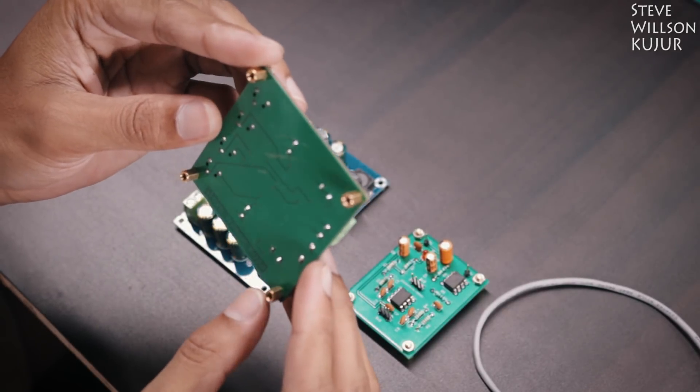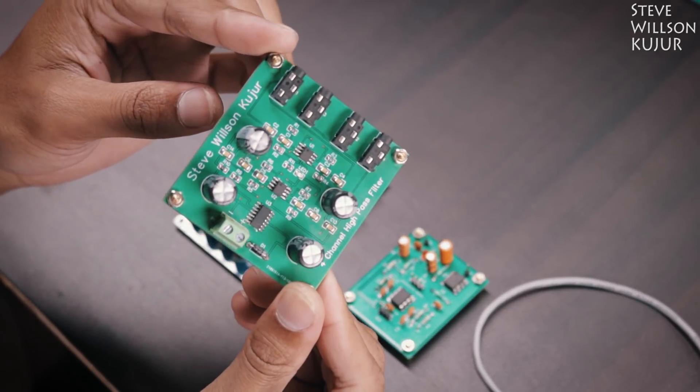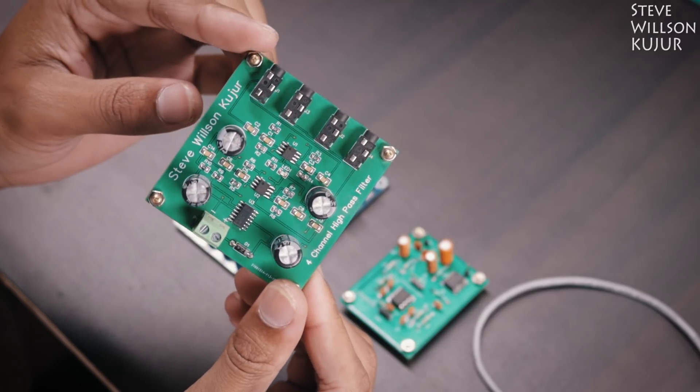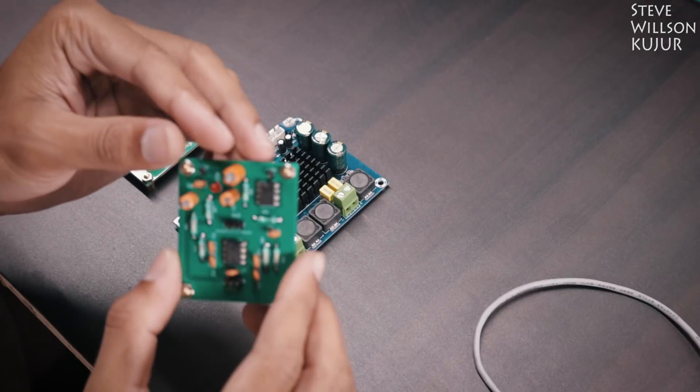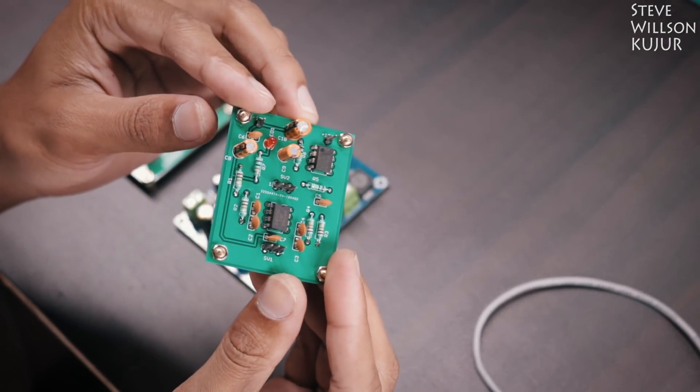You probably know this board if you are a regular viewer. This board is a 4 channel high pass filter version 1. And this is what we are going to make today.